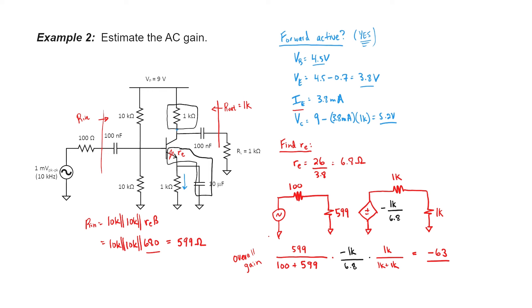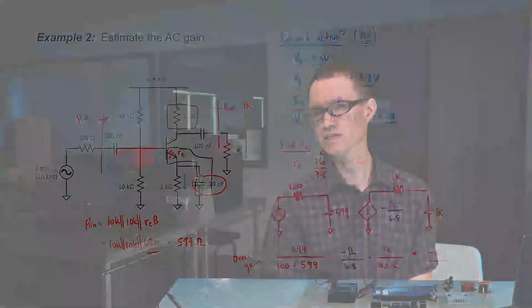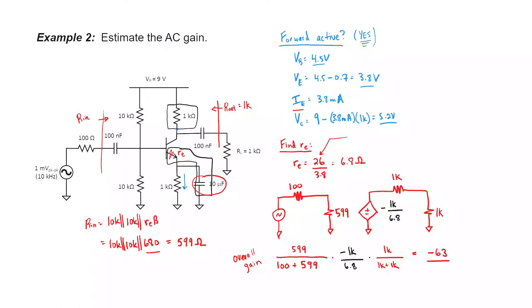That's a pretty big gain, but keep in mind that when you shunt the emitter resistor to raise the gain that high, you wind up making the gain a little bit unpredictable. This emitter resistance depends on temperature because 26 here is just kT, where T is measured in Kelvin. So if you heat it up a little bit, the emitter resistance goes up and your gain goes down. The gain becomes slightly uncontrollable — just something to keep in mind if you decide to use this technique in circuits.